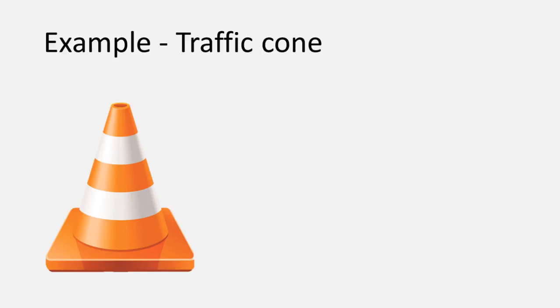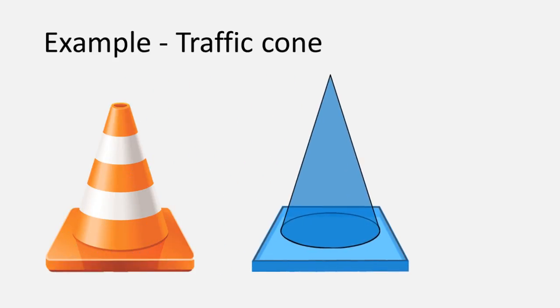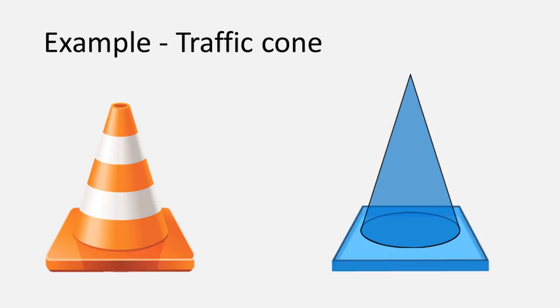Here is an example of a traffic cone. This shape can be split into two pieces, a cone that sits on top of a rectangular prism.